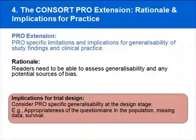The final extension is that PRO-specific limitations and implications for the generalizability of study findings should be reported. Readers need to be able to assess the generalizability of the PRO data and any potential sources of bias. PRO-specific limitations may include whether particular groups of patients were excluded due to language requirements, whether there were high levels of missing data, or the implications of PRO results in the context of survival data. In terms of trial design, we need to consider PRO-specific generalizability at the design stage and think about ensuring the questionnaire is appropriate for the general population.